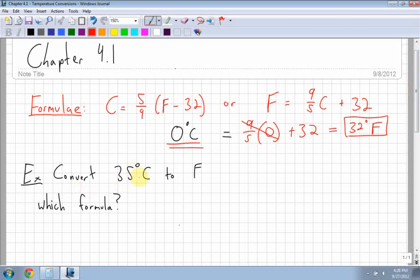All right. First example, convert 35 degrees Celsius to Fahrenheit. So which formula am I going to use? I'm given the Celsius. I want to convert to Fahrenheit. I want to try to find out what Fahrenheit is. That's right. I would use the second formula. So I start out with Fahrenheit is equal to nine-fifths Celsius plus 32.